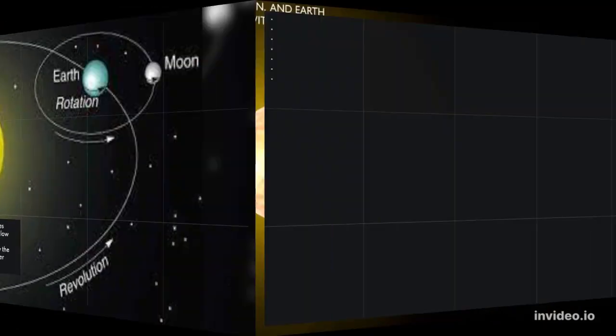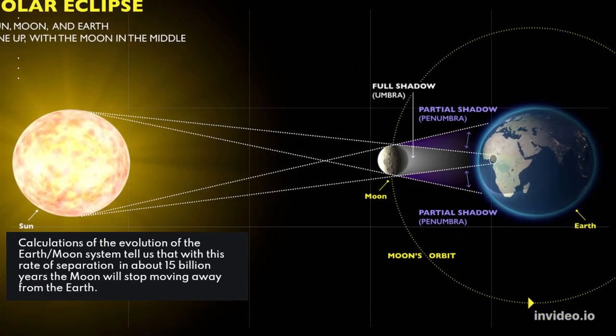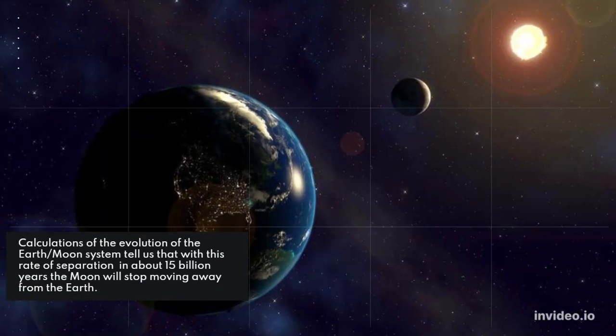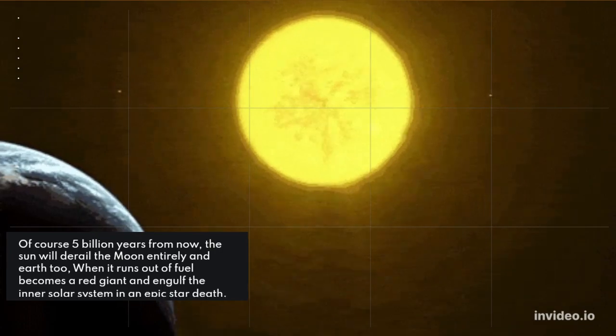Calculations of the evolution of the Earth-Moon system tell us that with this rate of separation, in about 15 billion years the Moon will stop moving away from the Earth.